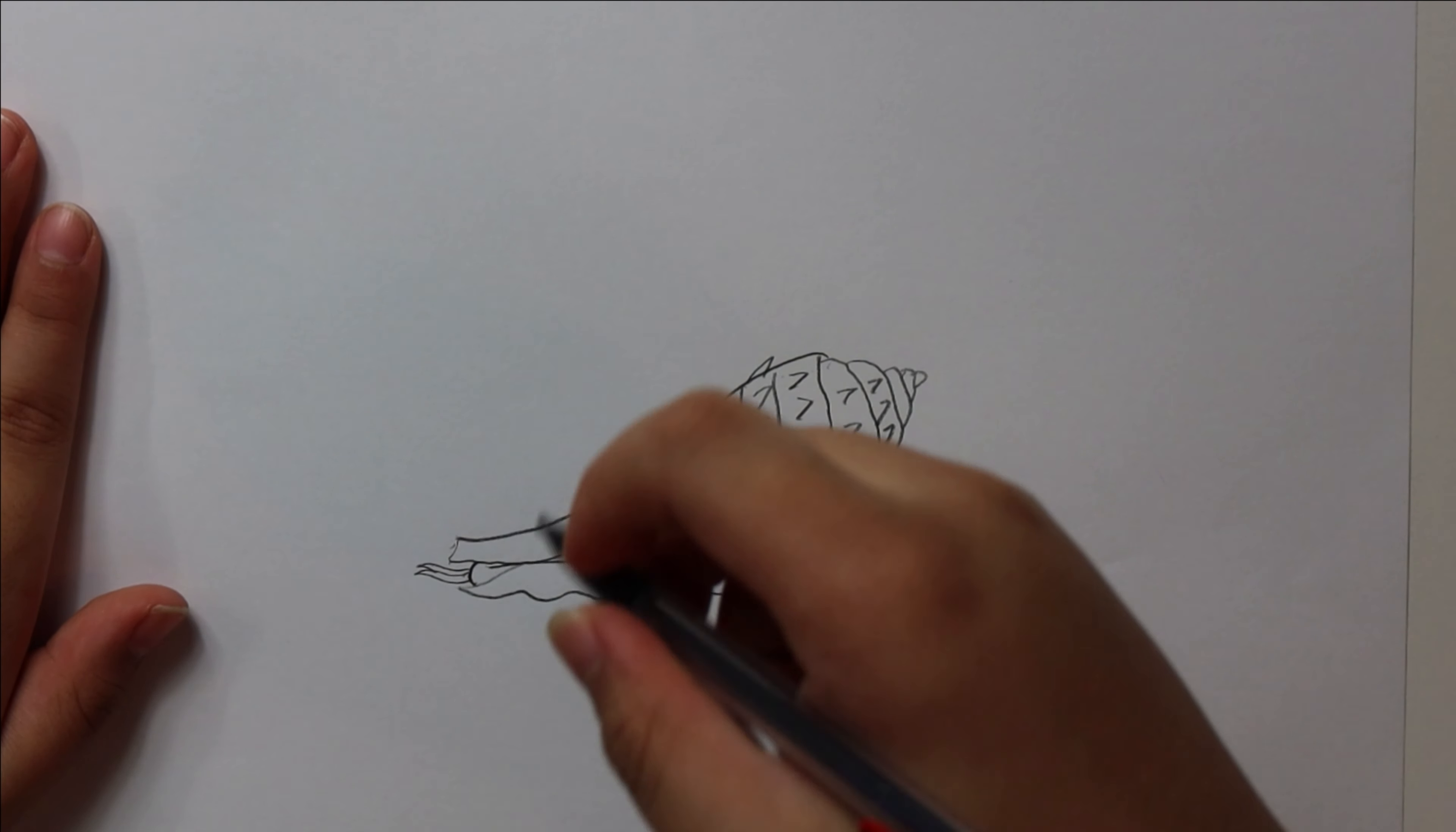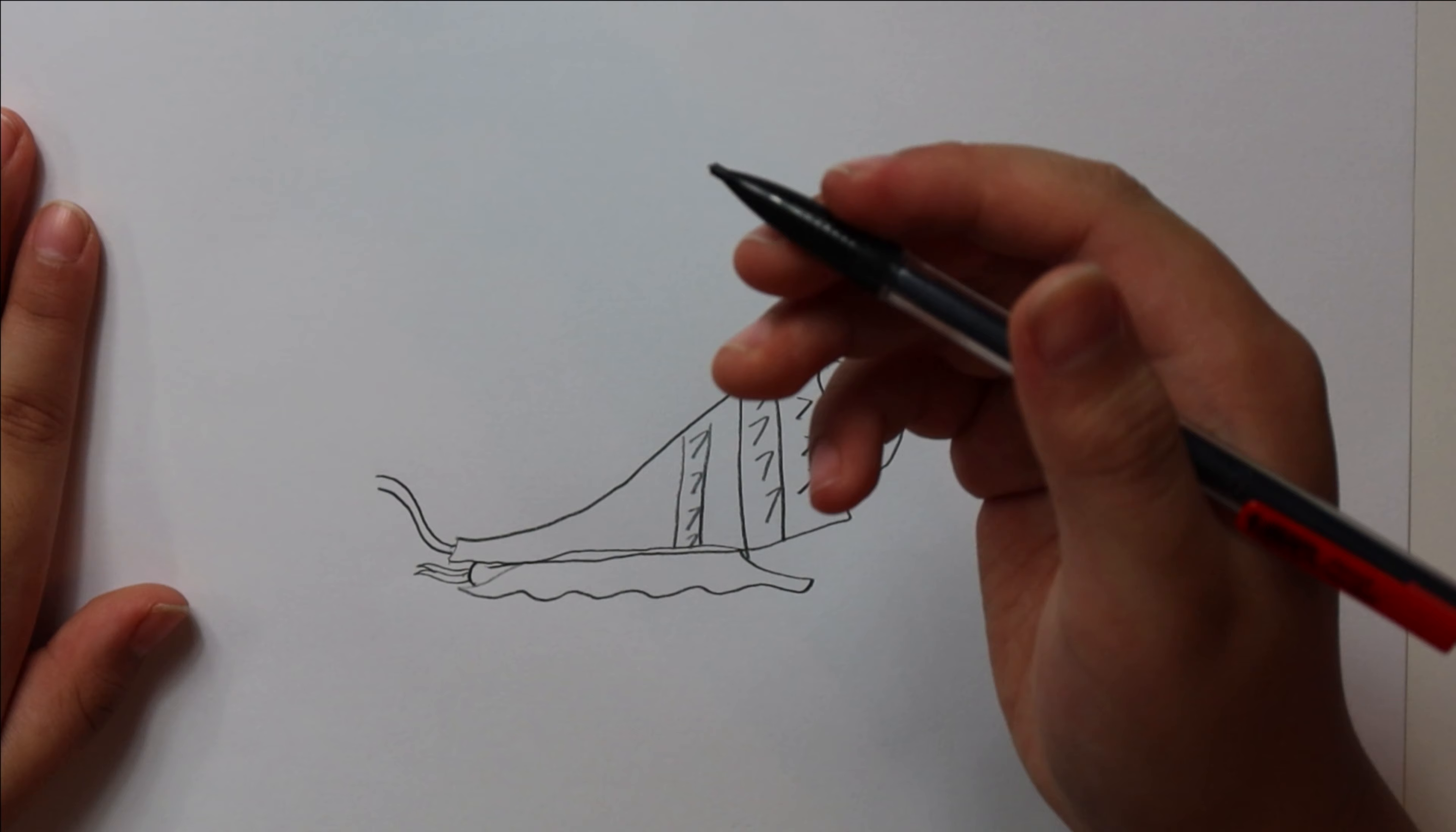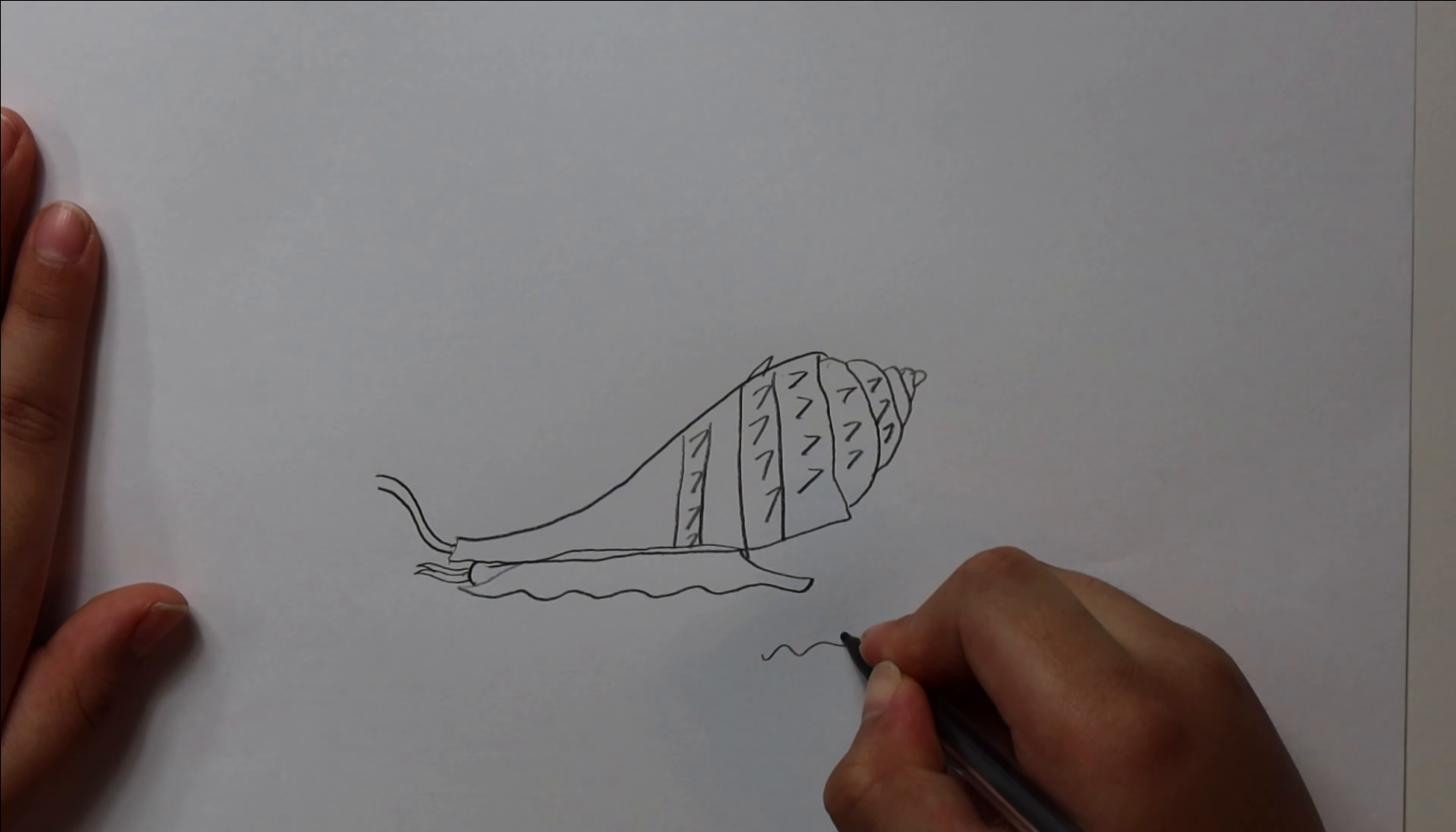But then back to this. So, you draw the siphon. This actually helps the snail to smell the food. The snail kind of buries in the sand, like this, with the siphon out.